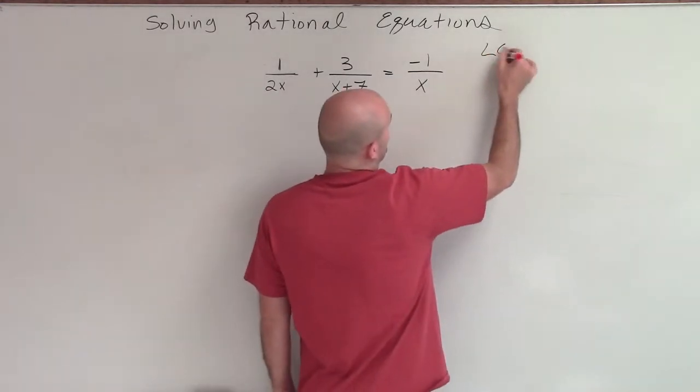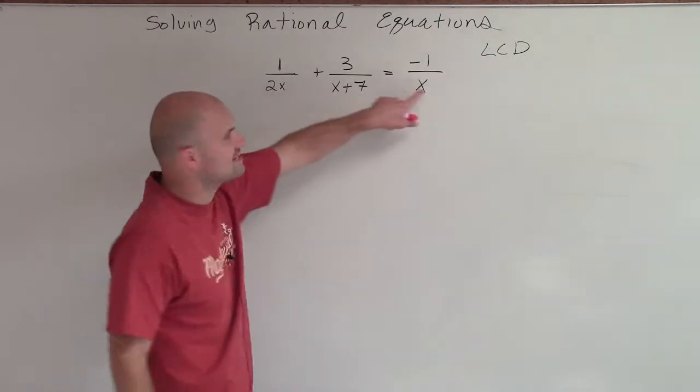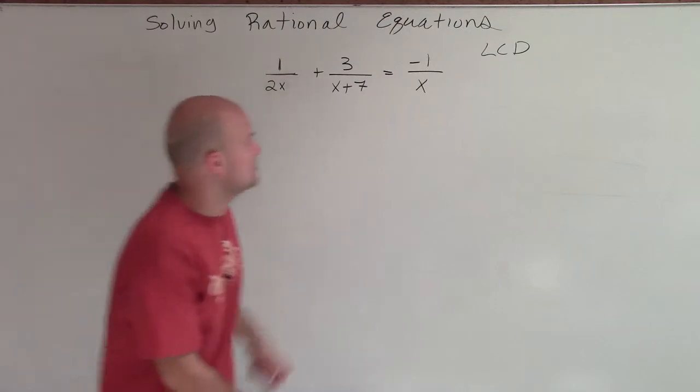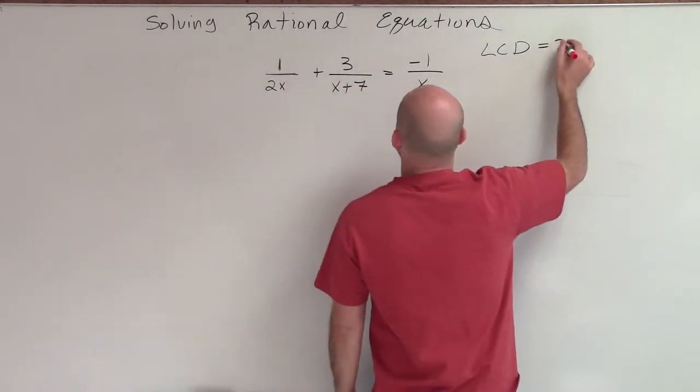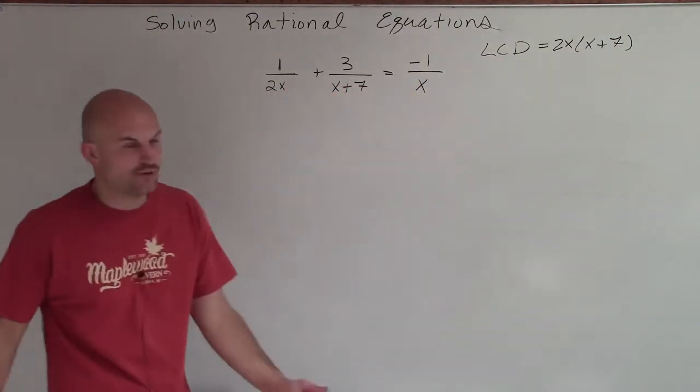So what I want to look at here is I have the LCD. I just take a look at each one of my denominators. Well, I notice I have a 2x and an x. I don't need to include both of them. I can just include the 2x. So therefore, my LCD is going to be 2x times x plus 7, because this x is already contained in the 2x.